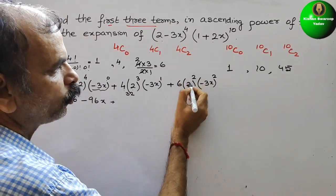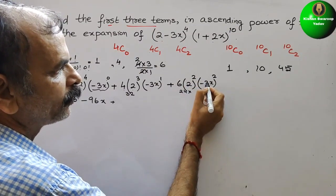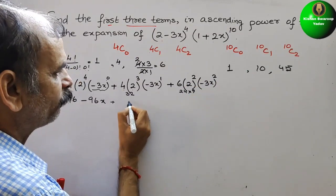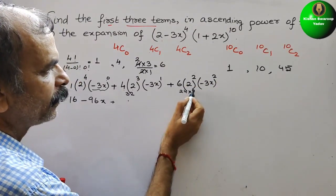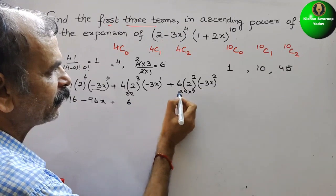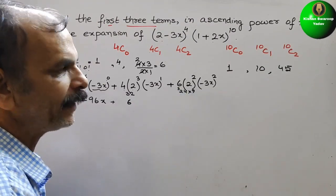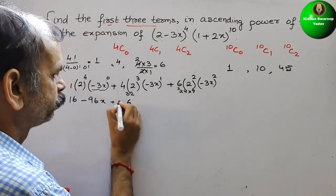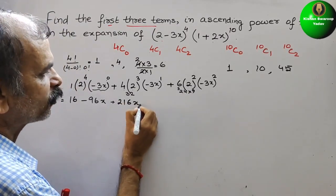For the third term: 6 into 4 is 24, into 3 squared which is 9, so 9 into 24 gives 216. The calculation: 9 into 4 is 36 with 3 carry, 9 into 2 is 18 plus 3 is 21, giving 216x squared.